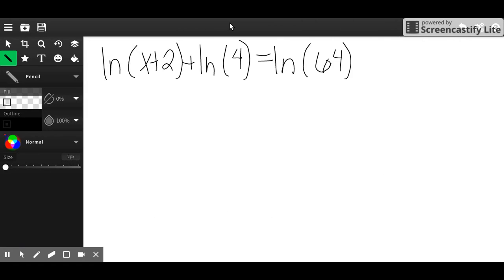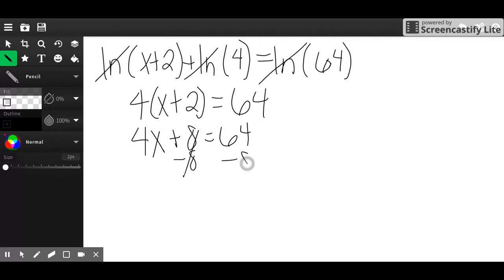With this one, since they all have natural log in front of them, I can just take them all out. So it'd be 4 times x plus 2 equals 64. Distribute the 4, subtract 8, and then divide by 4. x equals 14.